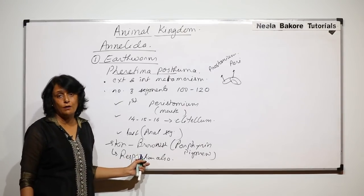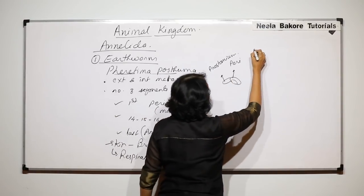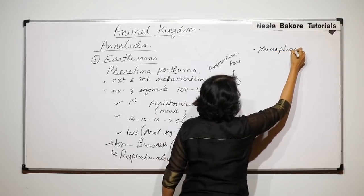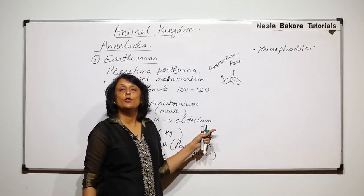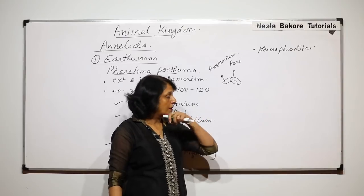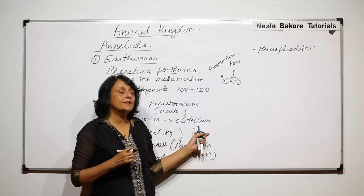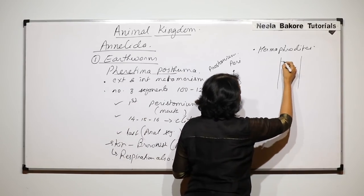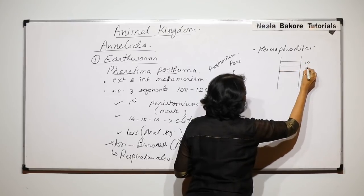Earthworms are hermaphrodites, meaning one earthworm has both male and female reproductive structures. If we see the worm from the ventral side and draw a few limited segments — 14th, 15th, 16th, 17th, 18th, and 19th — we can identify some important structures.